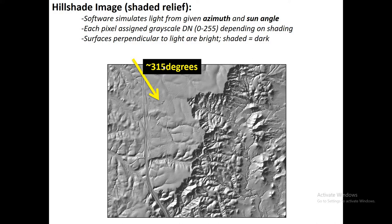Then you specify a sun angle, which is relative to the horizontal — how steep is the sun? Is it directly overhead or is it setting on the horizon? Because that affects shadows as well.